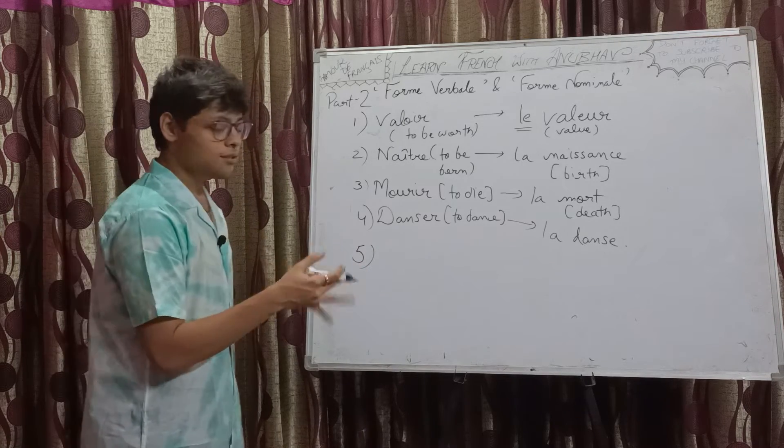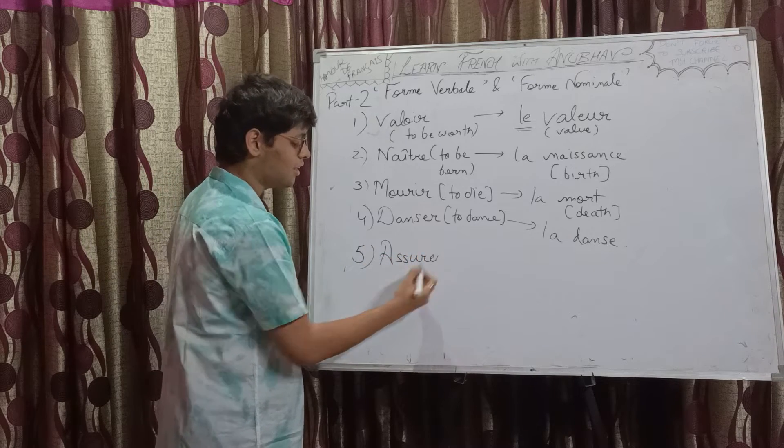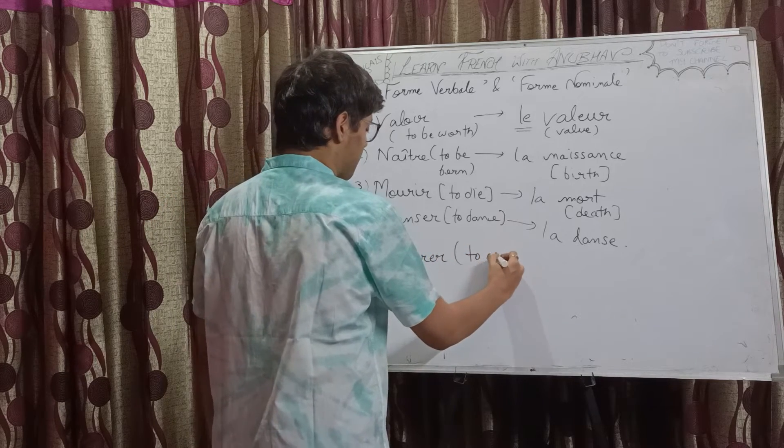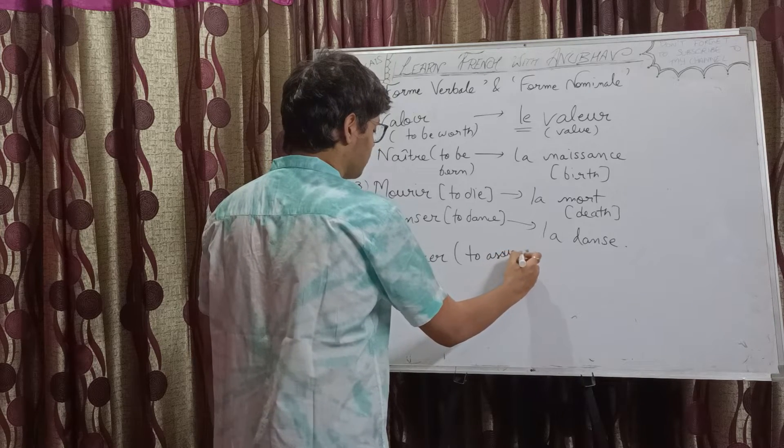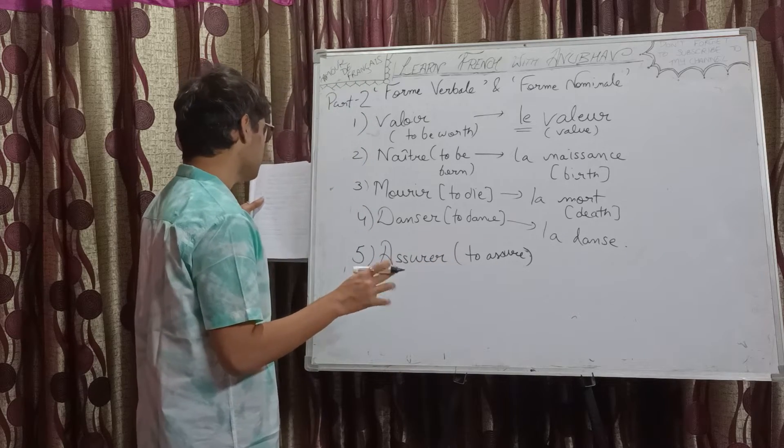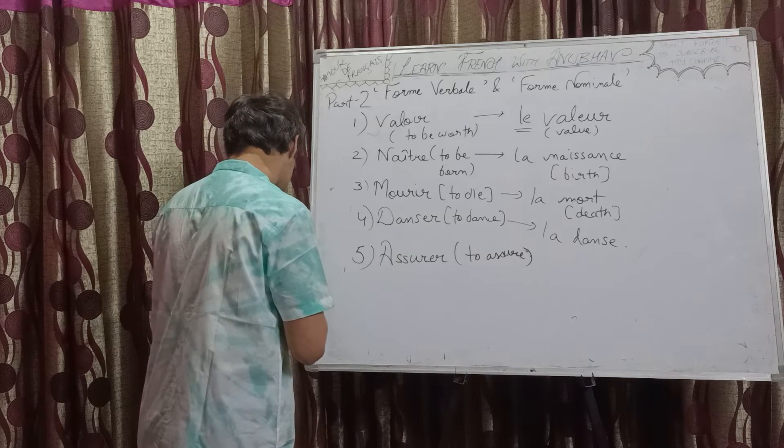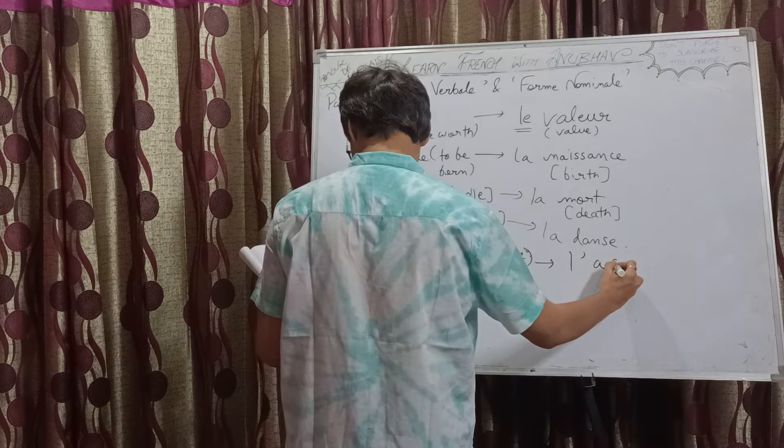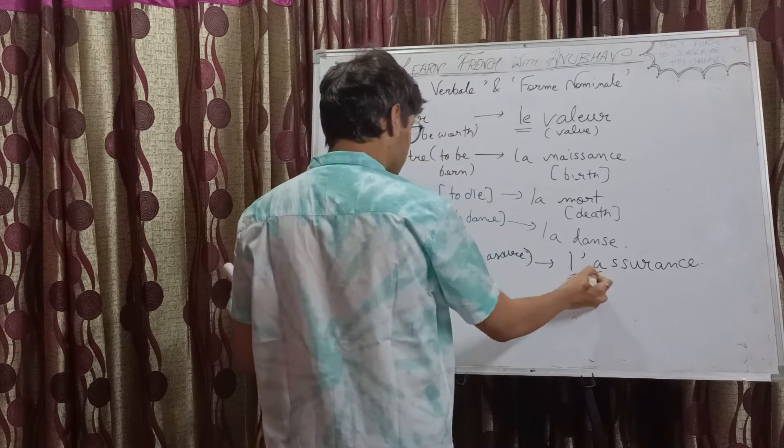Number 5, assurer. The spelling and the pronunciation is very much giving a hint that it means to assure. The noun form is l'assurance. L'apostrophe because it's beginning with a vowel.